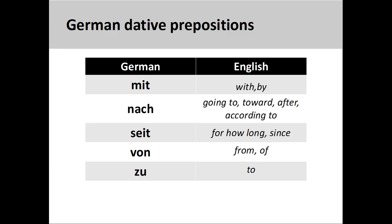The dative prepositions we will discuss in this presentation include: mit, meaning 'with' or 'by'; nach, meaning 'going to,' 'toward,' 'after,' or 'according to'; seit, meaning 'for how long' or 'since'; von, meaning 'from' or 'of'; and zu, meaning 'to.'